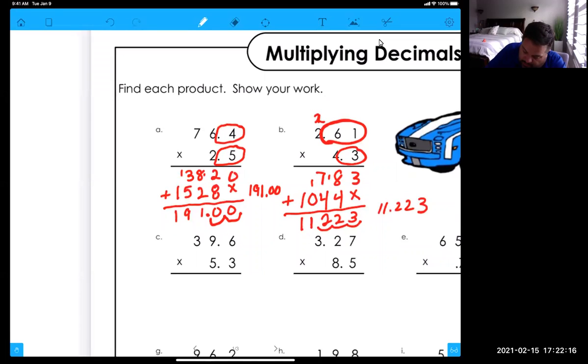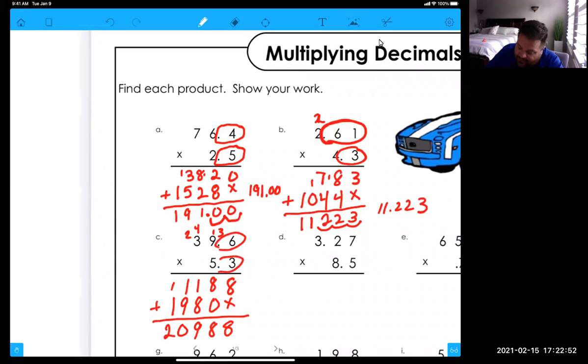All right, let's see here. Eighteen, carry the one. Three, seven. Twenty-eight, carry the two. Nine, ten, eleven. Placeholder. Thirty, carry the three. Nine. Nine times five is 45, 48, carry the four. Fifteen, nineteen. Add it up. Eight, eight, nine, ten, ten, nine, ten, ten, eleven, twelve.